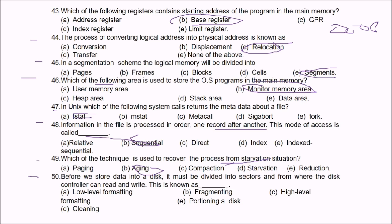Question 50: Before we store data onto a disk, it must be divided into sectors from which the disk controller can read and write. This is known as low-level formatting, also called physical formatting.